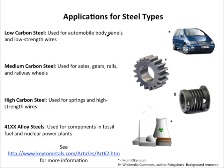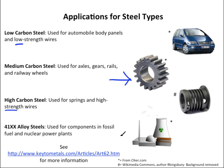Different steel types are best suited for different applications because of their different properties. Low carbon steels are used for automobile body panels and low-strength wires. Medium carbon steel is used for axles, gears, and railway wheels. High carbon steel is used for applications where strength is necessary — such as strings and high-strength wires. 41XX alloy steels are used for components in fossil fuel and nuclear power plants, though alloys change properties differently.